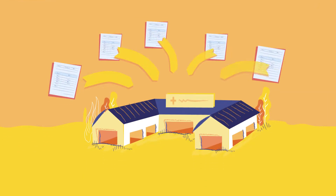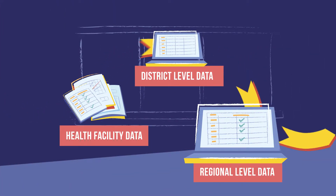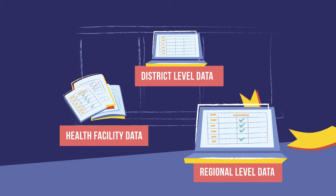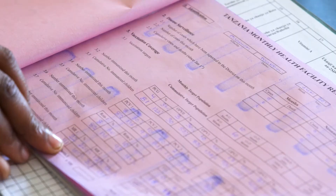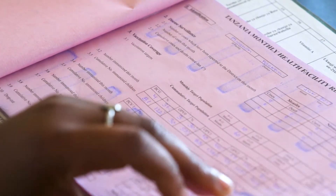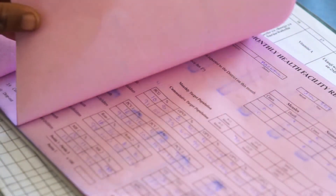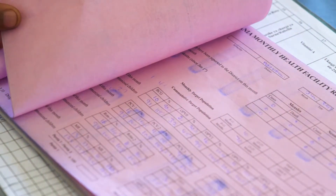Throughout the month, you gather and report vaccine-preventable disease and AEFI surveillance data. This data is analyzed by central or national authorities, but you can analyze surveillance data at the health facility level as well. Analyzing surveillance data can help predict and detect outbreaks, identify high-risk populations, and monitor the impact of immunization services.